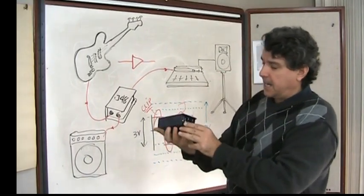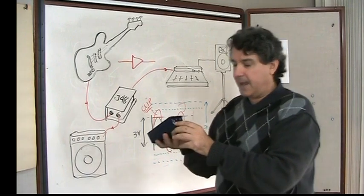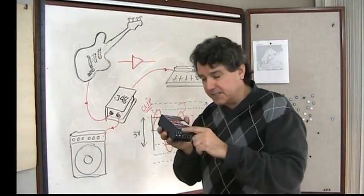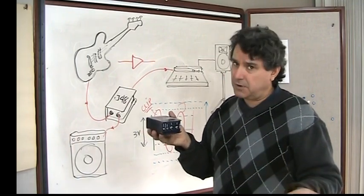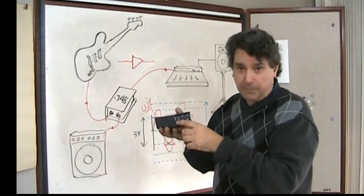Next, you've got a couple simple features. You've got a pad. What the pad does is it reduces the level going into the DI box. So, for extra hot keyboards or extra hot bass instruments, stuff like that, you might throw the pad on.